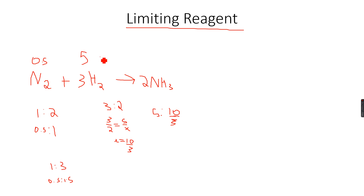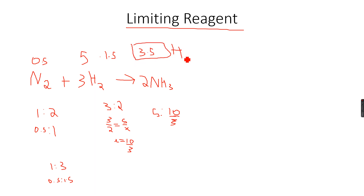Out of these 5 moles, only 1.5 moles will react, meaning 3.5 moles of H₂ will remain unreacted by the end of the reaction. Because all the nitrogen will be used up, hydrogen is called the excess reagent and nitrogen is called the limiting reagent.